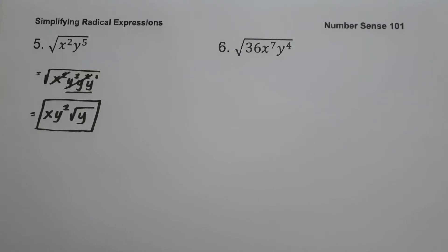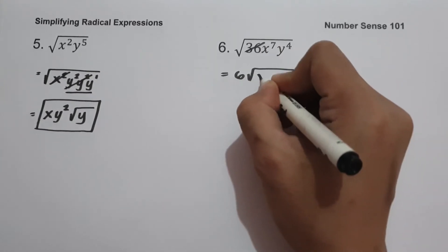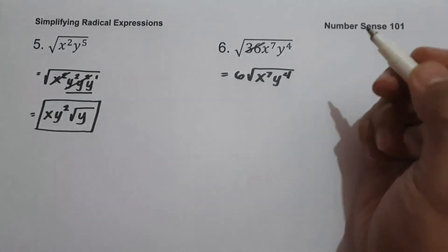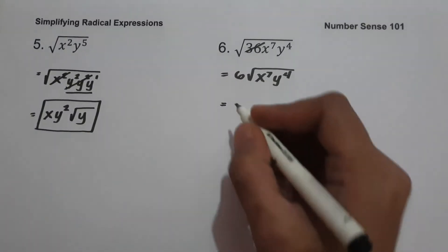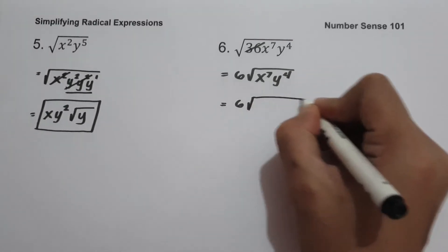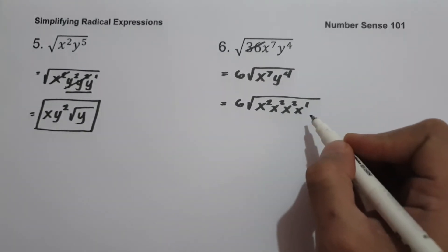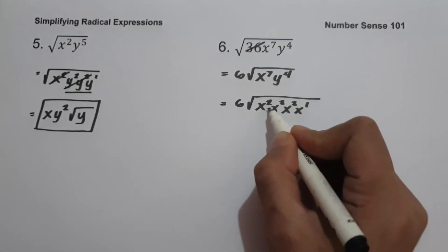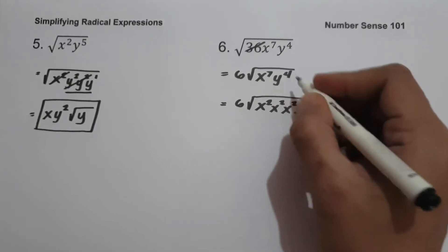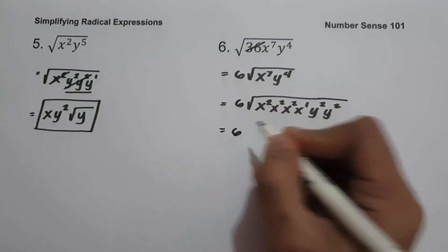On example number 6, we have square root of 36x raised to 7, y raised to 4. The square root of 36 is 6. To simplify the radicand we divide the exponents of x and y by 2 because our index is 2. So we rewrite x raised to 7 as x squared, x squared, x squared, and x raised to 1 — adding those exponents gives us 7. And y raised to 4 is y squared times y squared.